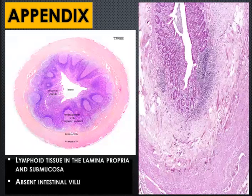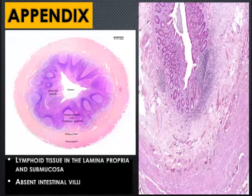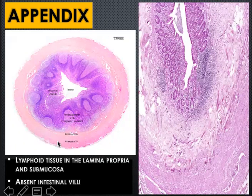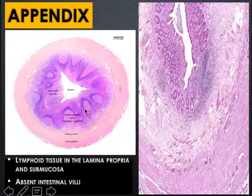The appendix is a diverticulum found in the cecum. Lymphoid tissue is found in the lamina propria of the appendix. Histologically, the appendix can be identified by the presence of lymphatic nodules but the absence of intestinal villi.